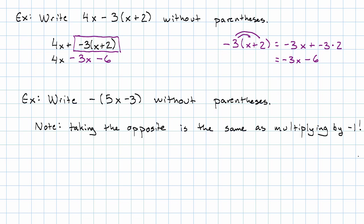Right? If I multiply something positive by negative 1, I get the negative version of that number. So, my opposite of 5x minus 3, I can understand that as negative 1 times 5x minus 3. And now, distributing, that's negative 1 times 5x plus negative 1 times negative 3.